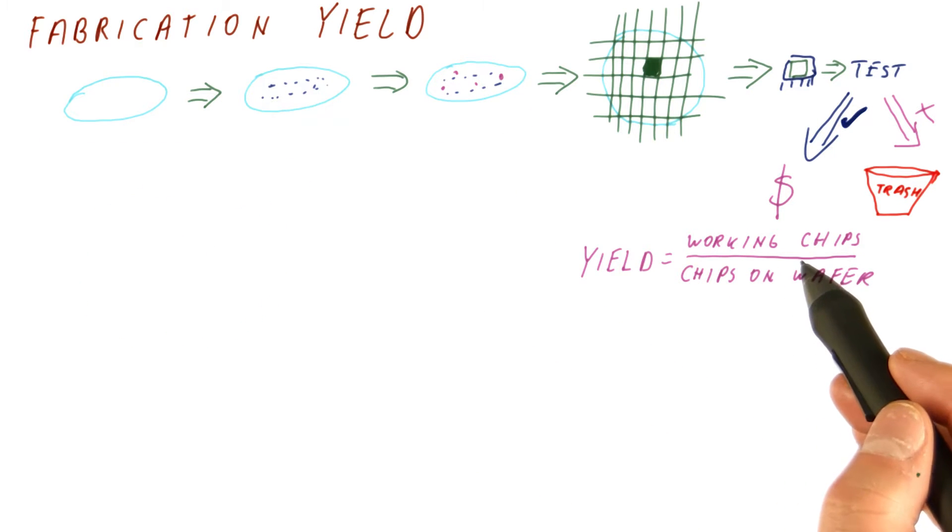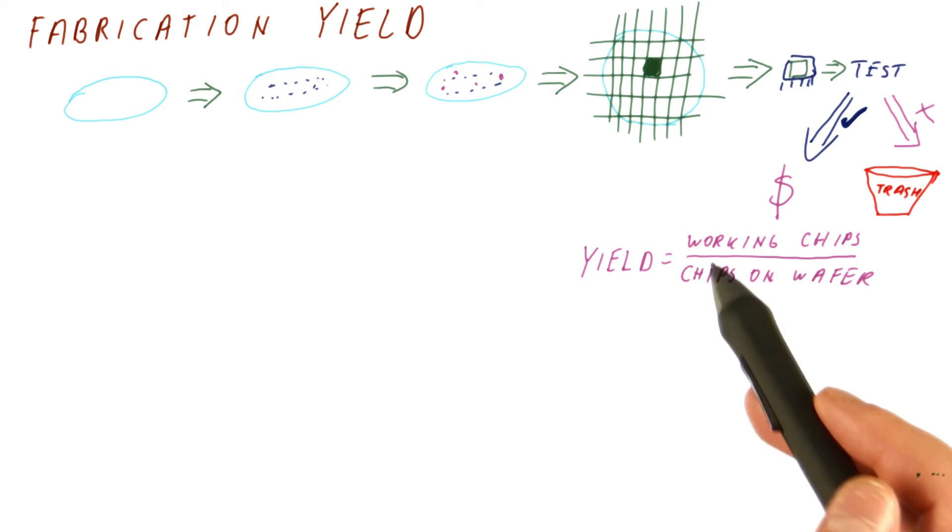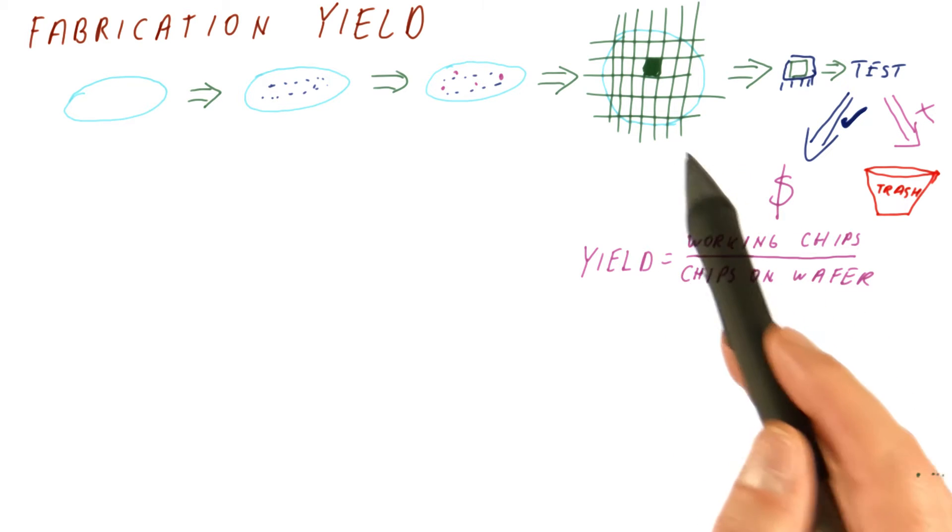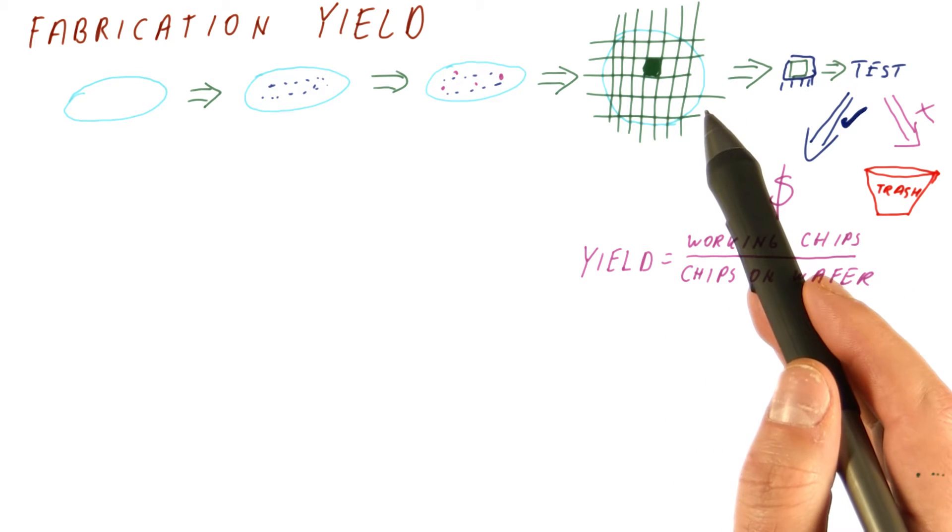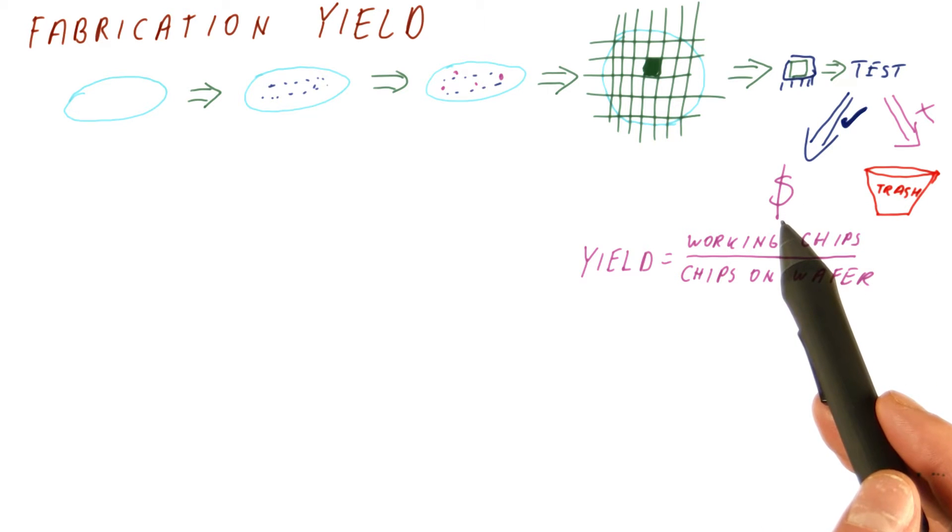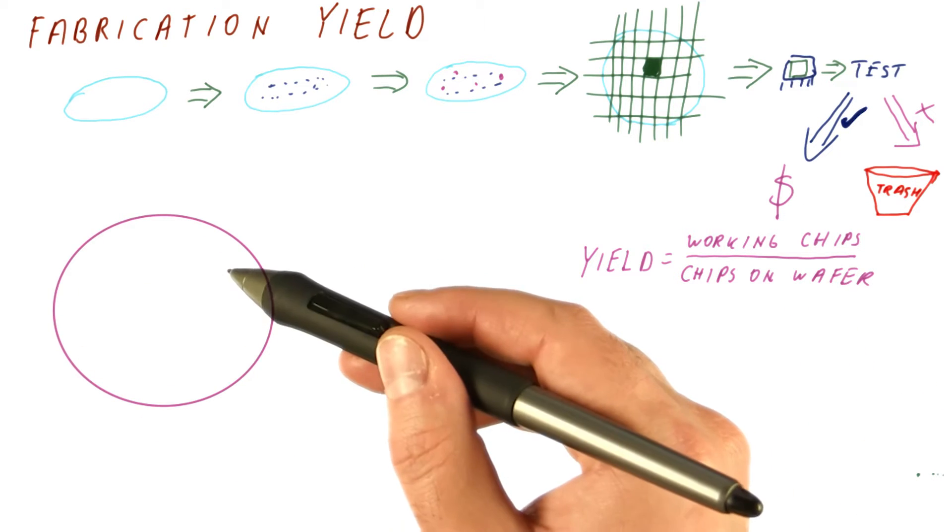We will see that the size of the chip affects the yield. It is not only that we get fewer chips when they're big, but also that a smaller percentage of them work. So let's say this is our wafer.